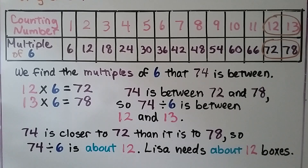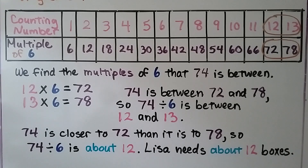74 is closer to 72 than it is to 78, so 74 divided by 6 is about 12. That would be a good estimate. So Lisa needs about 12 boxes for her cookies.